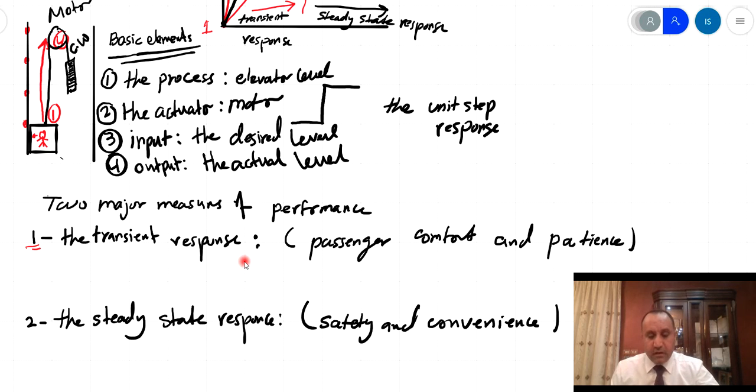How fast I can reach the final value or the desired output. If the response is too fast, the comfort of the passenger will be sacrificed. If the response is too slow, the patience of the passenger will be a sacrifice.